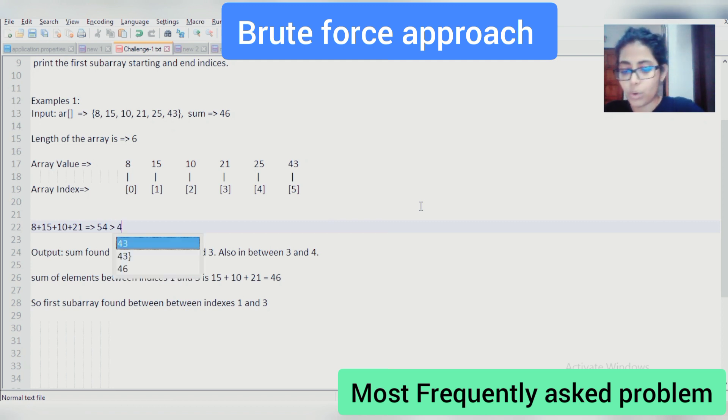It already gets over what we are expecting. 54 is greater than 46. So this subarray is not possible. What we are expecting, this is not that one. So no for this subarray.